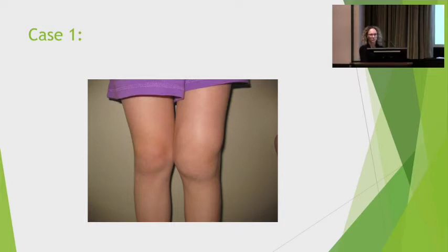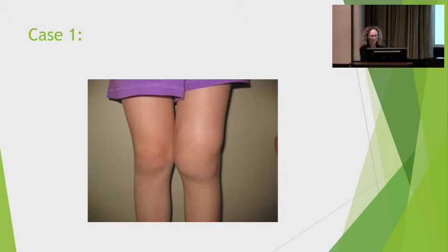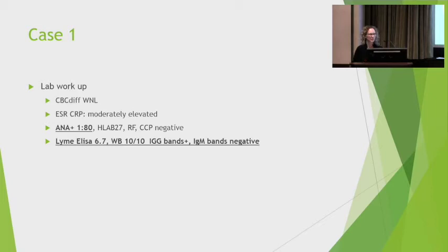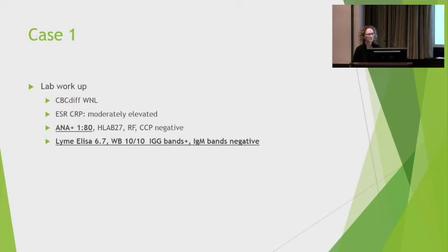The differential diagnosis for monoarticular arthritis is enormous, but in this case her workup shows a normal CBC, a sed rate and CRP that are minimally to moderately elevated, a positive ANA of 1:80 — and we'll talk about the ANA, which is the bane of existence of all pediatric rheumatologists. The rest of the autoantibodies, HLA-B27, rheumatoid factor, and CCP are negative. Her Lyme ELISA is 6.7 with full house IgG positivity; IgM bands are negative.